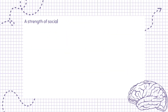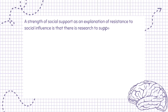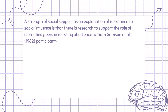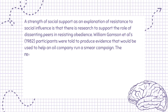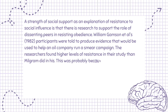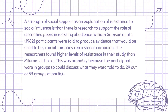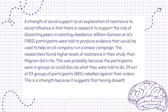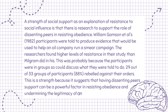A further strength is that there is research to support the role of dissenting peers in resisting obedience. William Gamson et al. (1982) found that participants told to produce evidence for an oil company smear campaign showed higher levels of resistance than Milgram's participants. This was probably because participants were in groups and could discuss what they were told to do — 29 out of 33 groups, 88%, rebelled against their orders — suggesting that dissenting peers' support is a powerful factor in undermining the legitimacy of an authority figure.